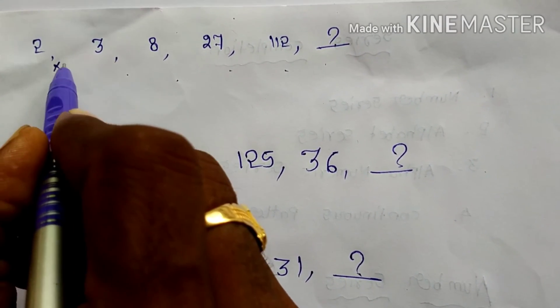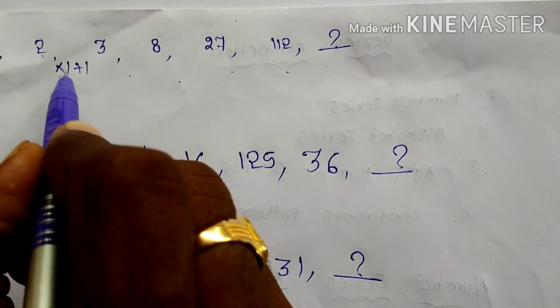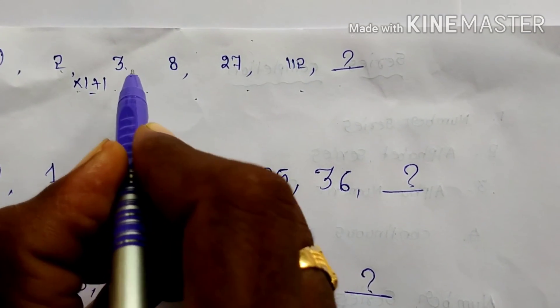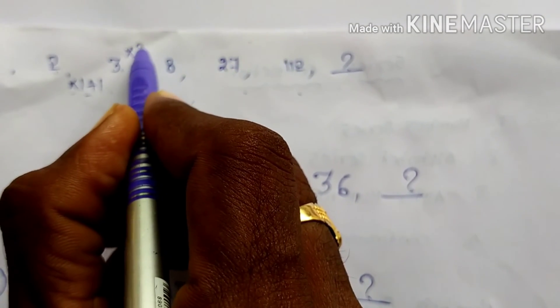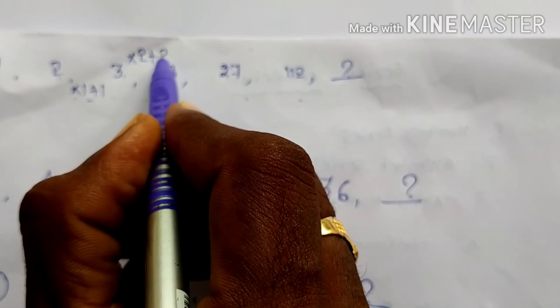Yes, you can see there. Into 1, plus 1. 2 into 1, plus 1, 3. Next here. 3, 2, just 6. 6 plus 2. You add only.